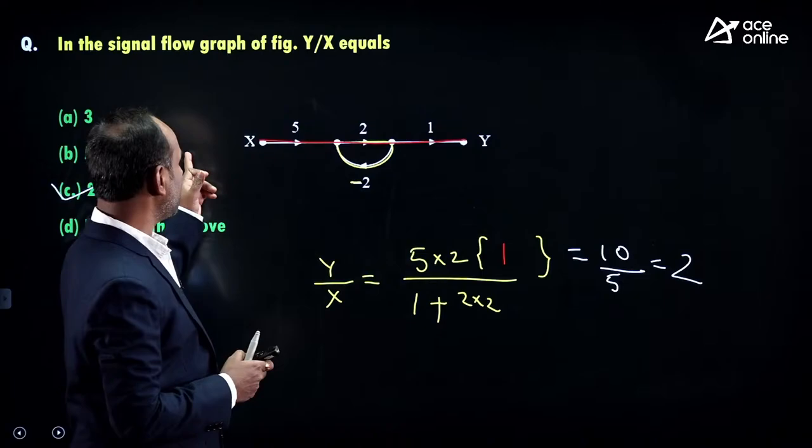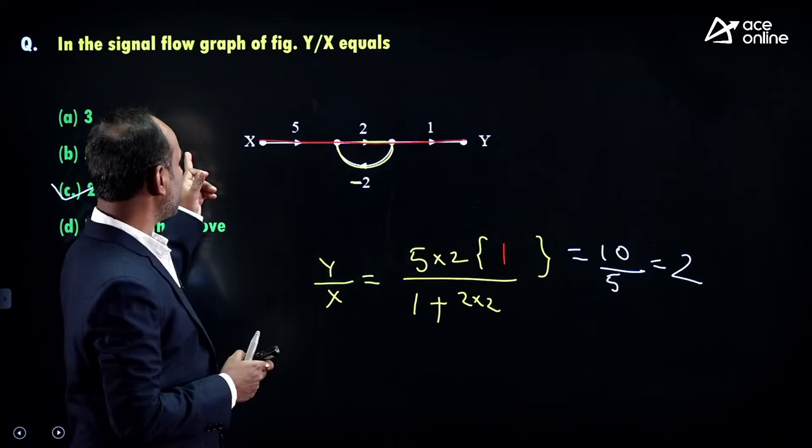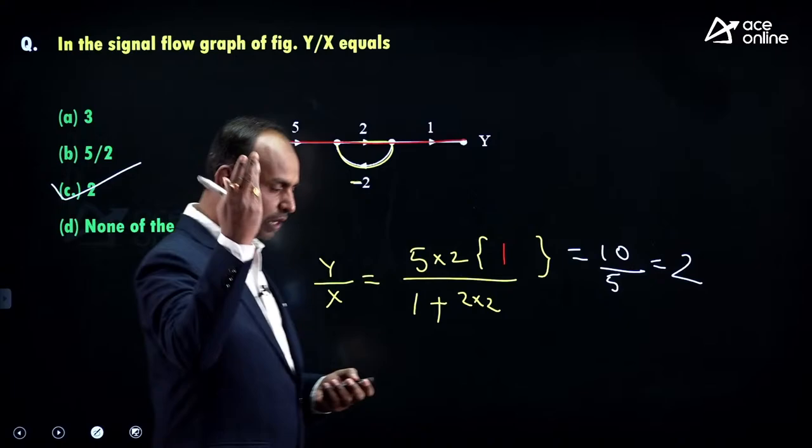In signal flow graph, examiner may also ask: how many forward paths, how many individual loops, how many two non-touching loops — these are expected question types.